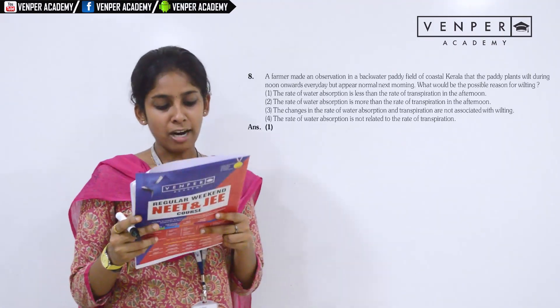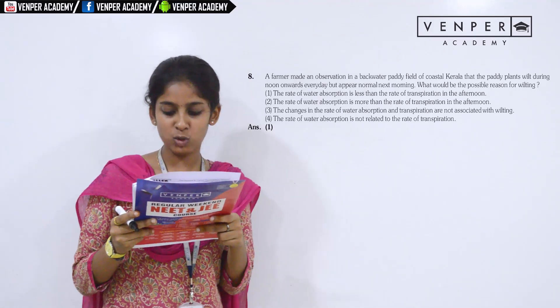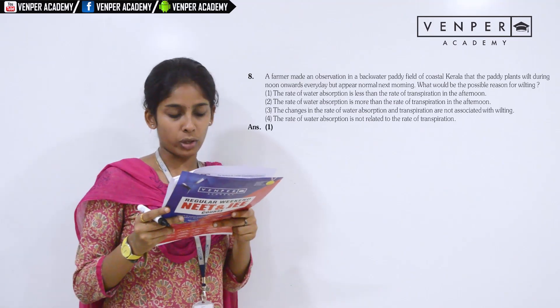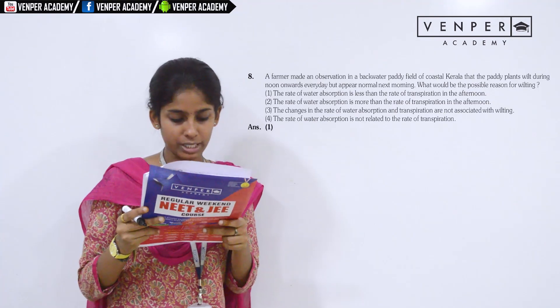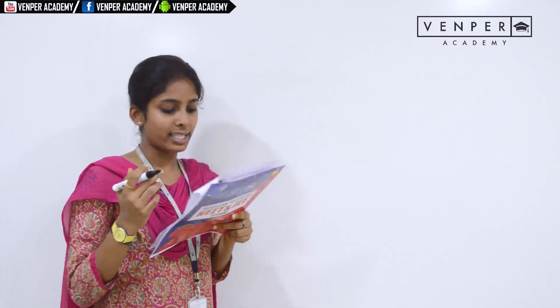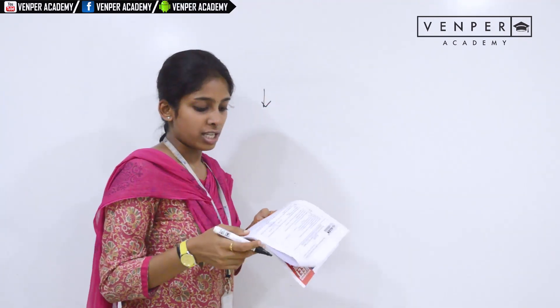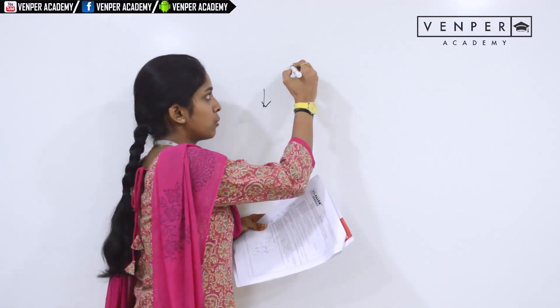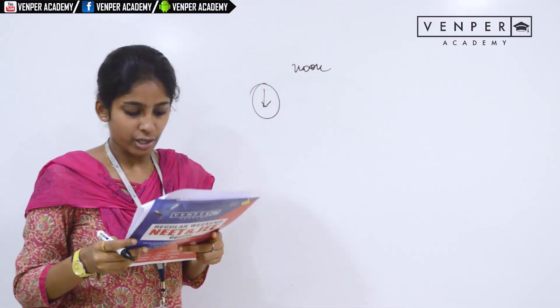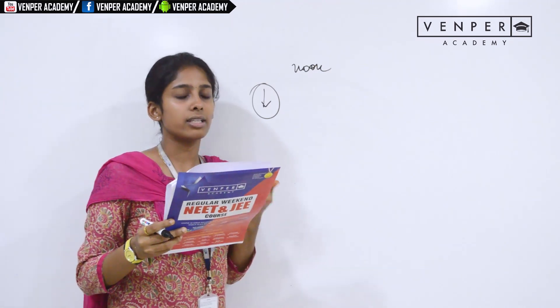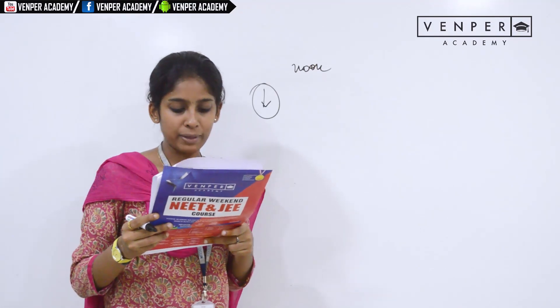Question 8: a farmer made observations in a backwater paddy field of coastal Kerala. The paddy plants will wilt during noon onward every day but appear normal the next morning. What would be the possible reason for wilting? The reason they wilt is that the rate of absorption is less than the rate of transpiration in the afternoon. During the noon time, the rate of absorption is lesser than the rate of transpiration. That is the reason the leaves of the plants wilt during noon and become normal in the morning. So option would be A.